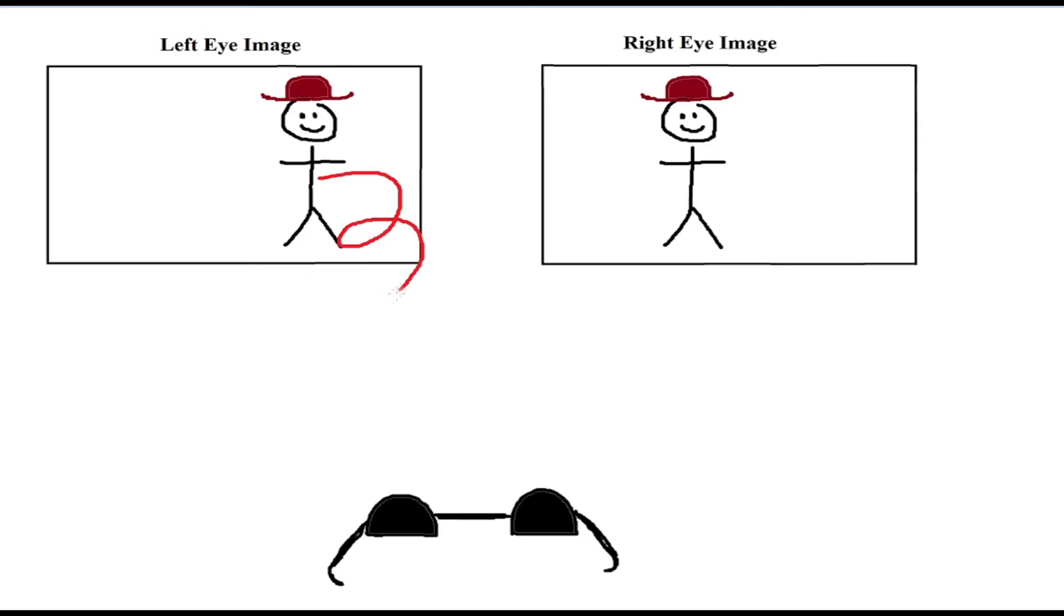A computer that controls the projector will also ensure that the light leaving the screen is circularly polarized in different directions for the different views. I didn't go into a lot of detail on this, but circular polarized light can either rotate clockwise or counterclockwise. So the left eye view will be clockwise and the right eye view will be counterclockwise. It can also be the opposite,